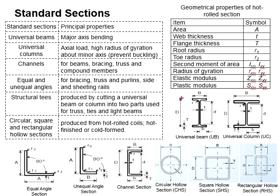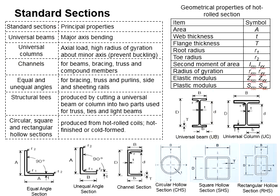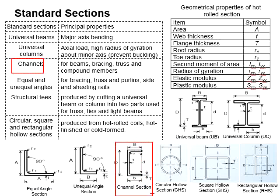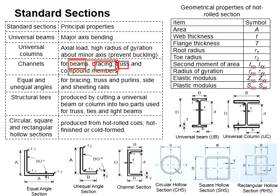The universal column is mainly designed to withstand axial loads. The aspect ratio between B and D is more or less one to one, so that it is able to resist buckling under axial compression. The channel section can be used as a beam, bracing, truss, and compound member.